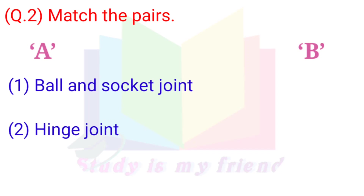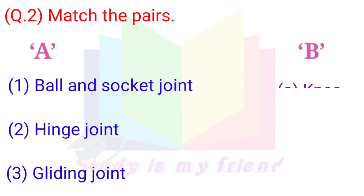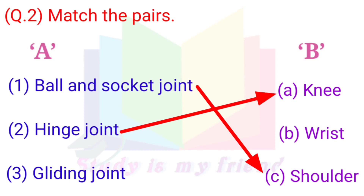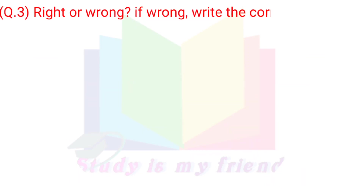Question 2: Match the Pairs. 1. Ball and socket joint, 2. Hinge joint, 3. Gliding joint. Options: A. Knee, B. Wrist, C. Shoulder. Answers: 1. Ball and socket joint — C. Shoulder. 2. Hinge joint — A. Knee. 3. Gliding joint — B. Wrist.